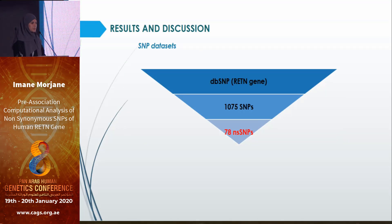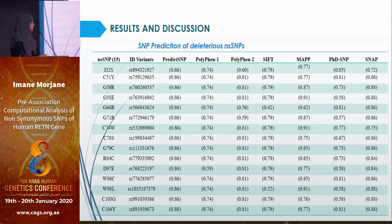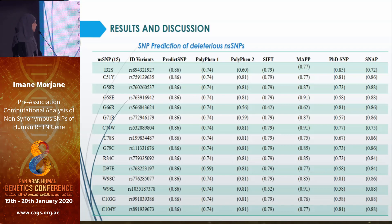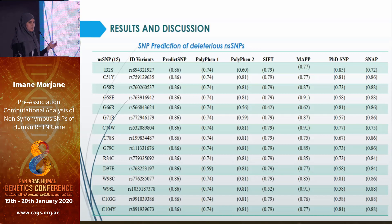From dbSNP we retrieved 78 non-synonymous SNPs of human RETN Gene. The results shown in this table are from PredictSNP with all its included tools, and from these scores we selected 15 non-synonymous SNPs that were predicted as deleterious by all tools.